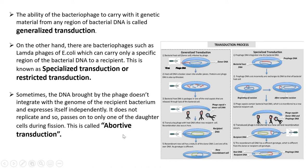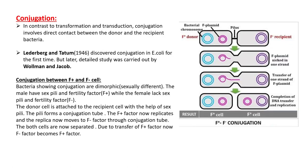The process of conjugation differs from transformation and transduction in that it involves direct contact between the donor and recipient cell. Lederberg and Tatum discovered conjugation in E. coli in 1946, and the detailed study was later carried out by Ullmann and Jacob.